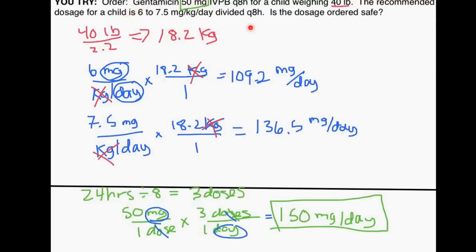Looking at what's recommended for a patient weighing 40 pounds — between 109.2 and 136.5 milligrams per day — and comparing that to our order of 150 milligrams per day: 150 exceeds the recommended maximum. We can't say whether it would hurt the patient, but since the patient will be receiving more milligrams per day than recommended, we should check with the prescriber.